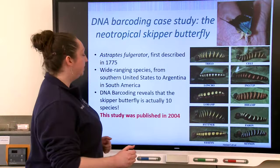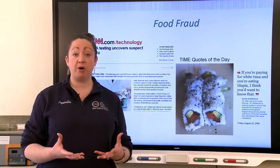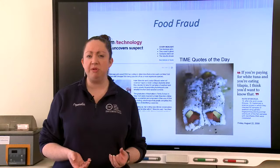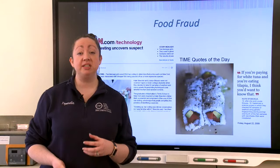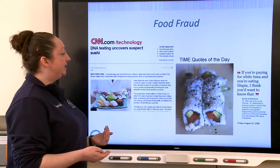DNA barcoding can also be used to detect food fraud. You may have heard of the SushiGate study, done by two high school students in New York City who collected 60 sushi samples from different markets and restaurants. Because filleted fish doesn't look like the original fish, classic taxonomy is very difficult. They found that over 25% of samples were mislabeled — in each case as a more expensive fish than it actually was. For example, tilapia was being marketed as white tuna.